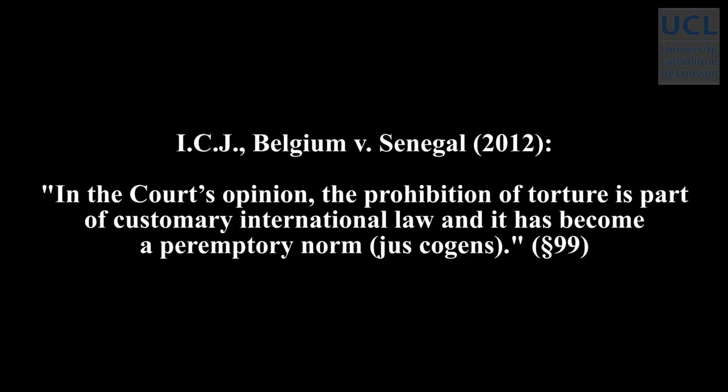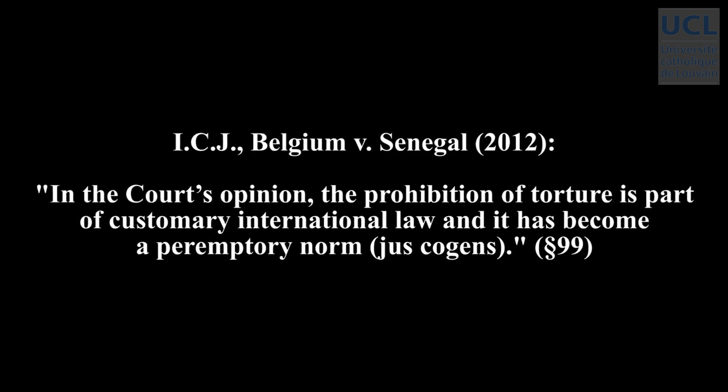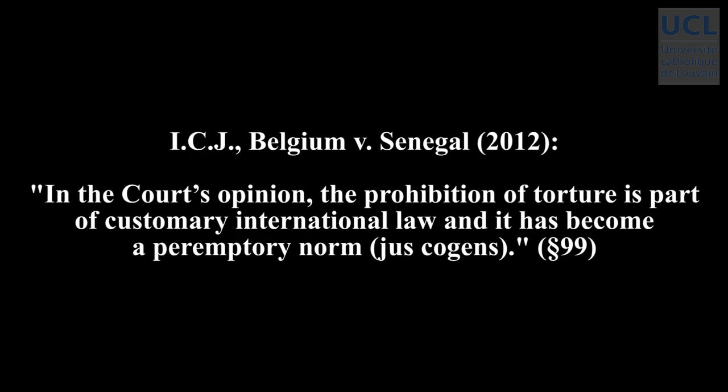In a case between Belgium and Senegal about the failure by Senegal to prosecute the former head of state of Chad accused of acts of torture, the International Court of Justice briefly said: 'the prohibition of torture is part of customary international law and it has become a peremptory norm, jus cogens.' The court went on to refer to practice and to opinio juris. So from the ICJ's point of view, it seems undisputable that jus cogens norms are part of customary international law — they come to existence through the usual customary process. However, because each and every rule of customary international law is not peremptory, jus cogens norms are a special category of norms within customary international law.